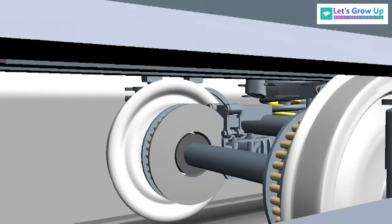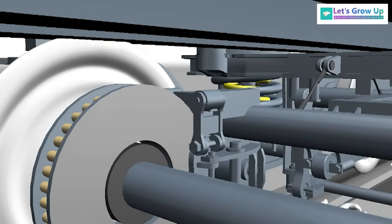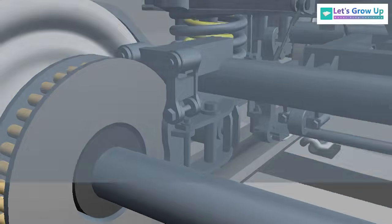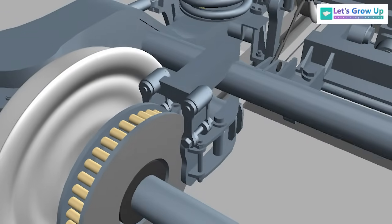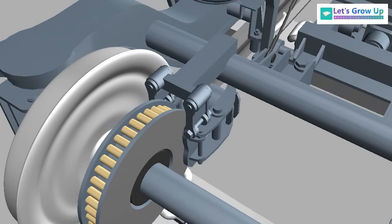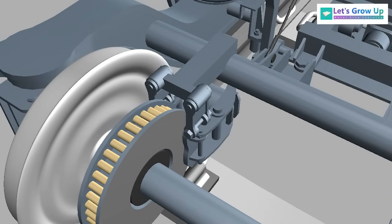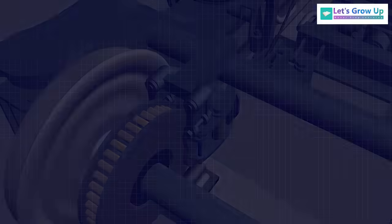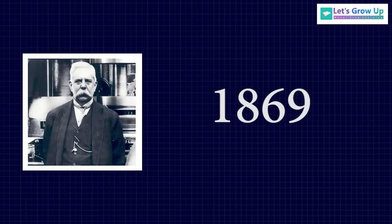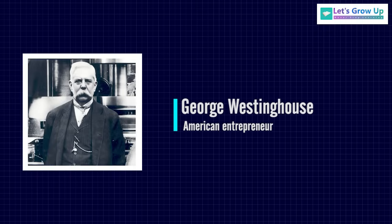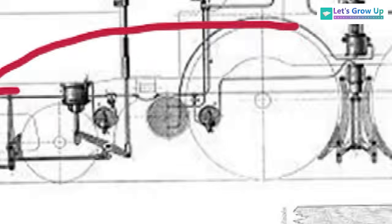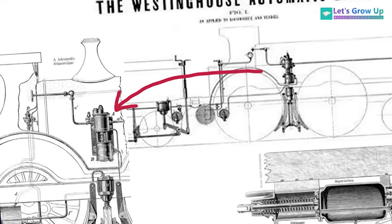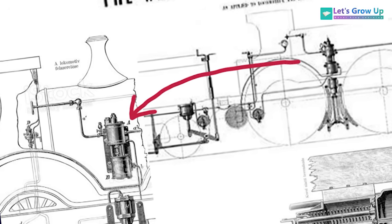The air brake is the standard system used by railways all over the world. It is based on the simple physical properties of compressed air. In 1869, an engineer named George Westinghouse invented the first triple valve air brake system, after considering the importance of safety in the railroad industry. However, his system worked the opposite way of a direct air brake system.